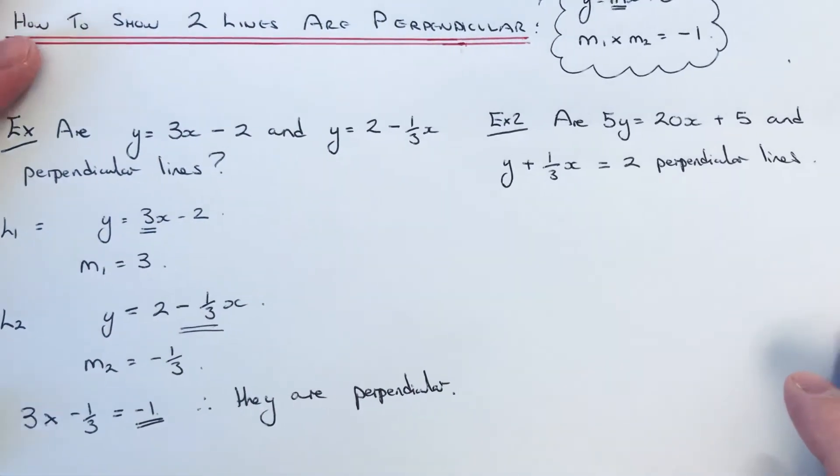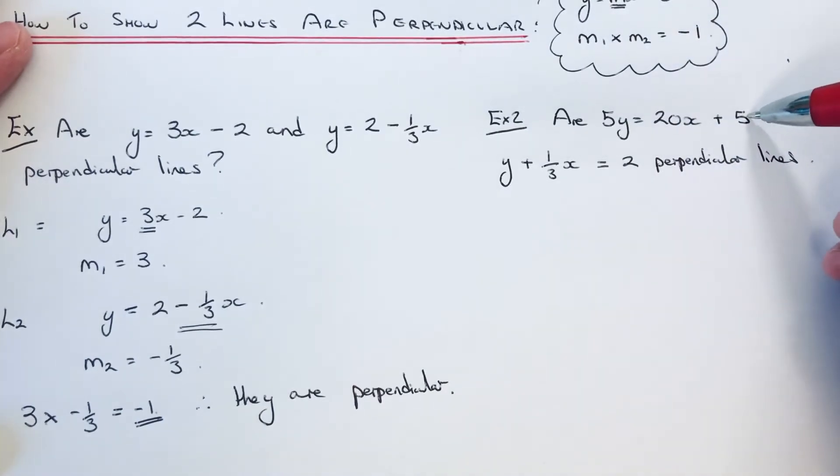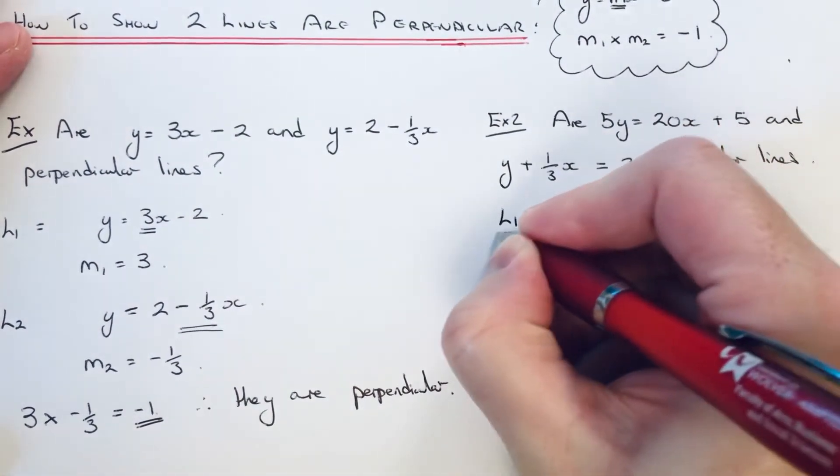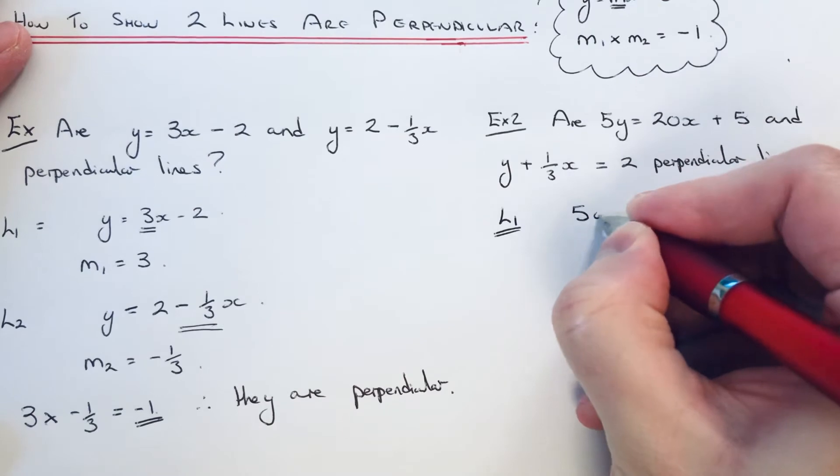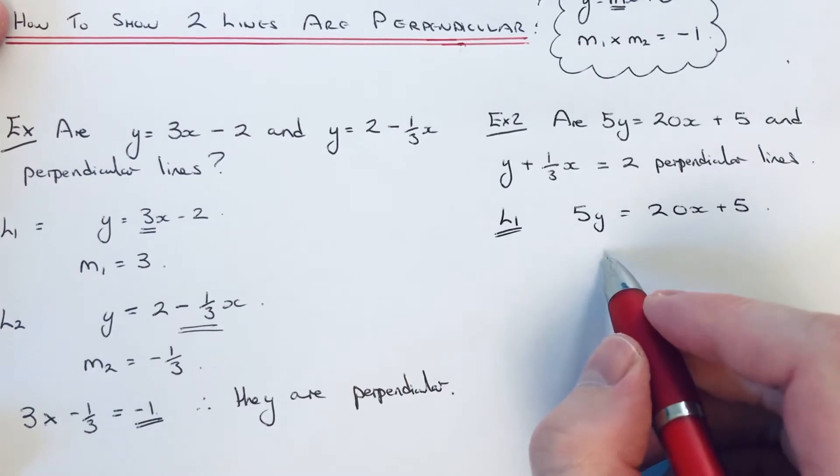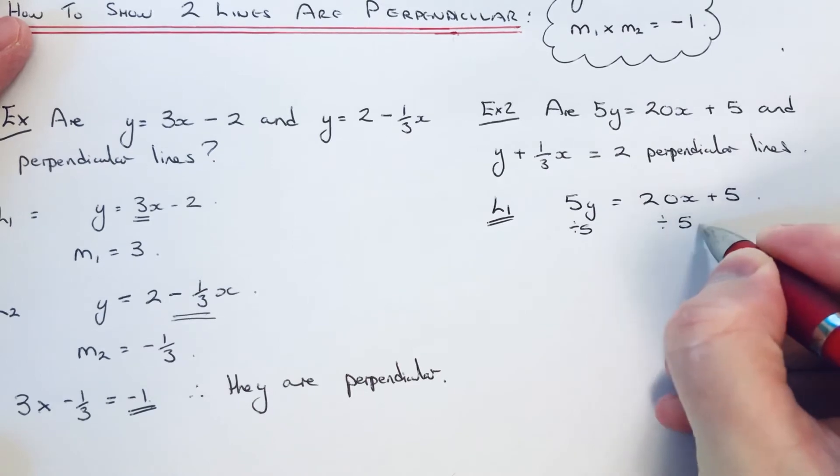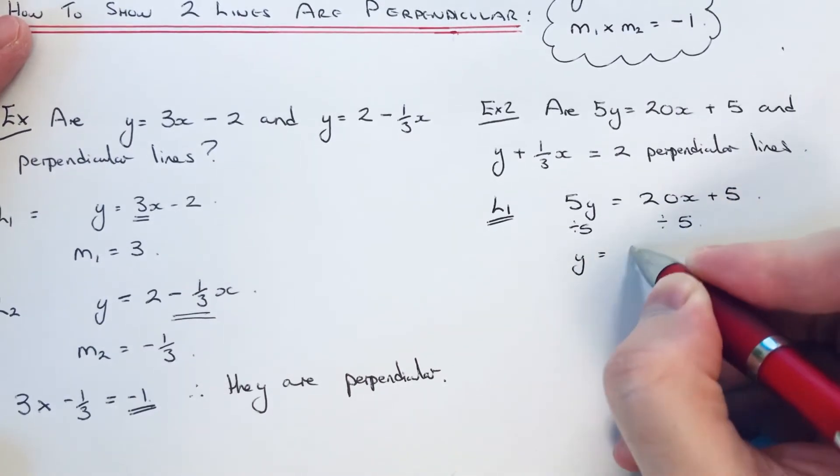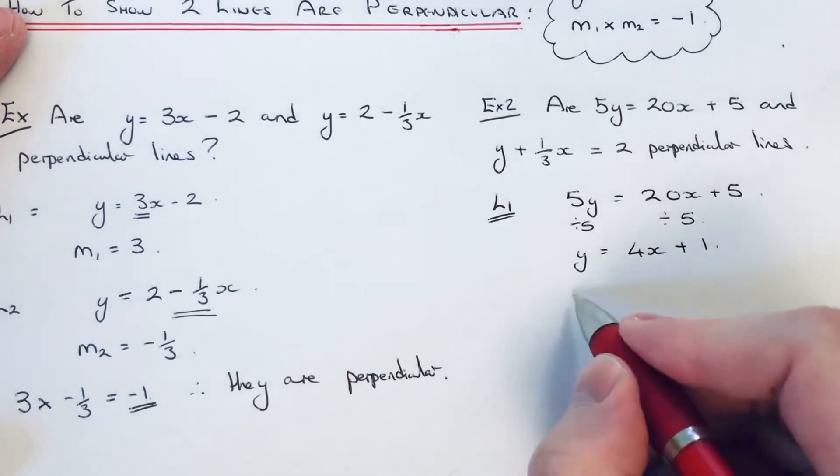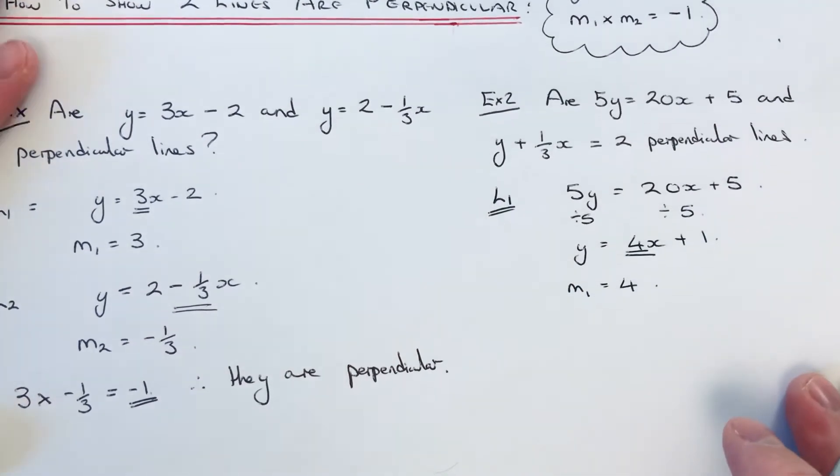So let's move on to the second example. So this time we've got 5y=20x+5 and y+⅓x=2. So let's start with our first line, 5y=20x+5. So we just need to make y the subject before we can write down the gradient. So if we divide both sides by 5, 20x divided by 5 is 4x, 5 divided by 5 is 1. So the gradient of this line is 4, because that's the number before x.